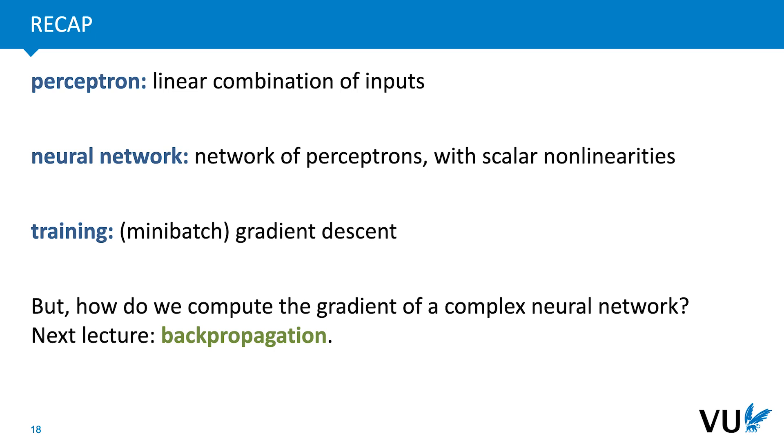What we haven't discussed is how to work out the gradient of a loss function over a neural network. For simple functions, like linear classifiers, this can be done by hand. For more complex functions, like deep neural networks, this is no longer feasible and we need some help. This help comes in the form of the backpropagation algorithm. This is a complex and very important algorithm, so we will leave it aside for now and dive into it in the next lecture.